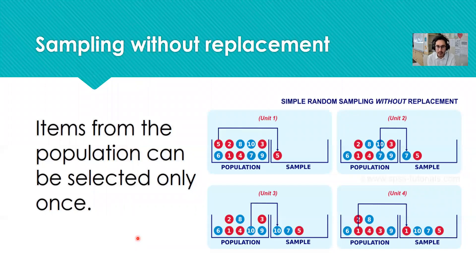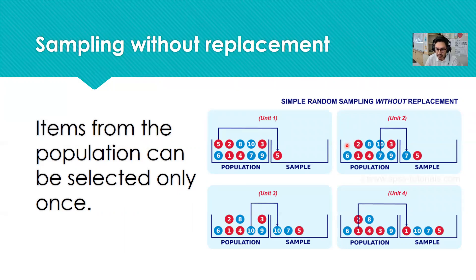Let's first begin by talking about sampling without replacement, which is probably done the majority of the time. When we sample without replacement, items from the population can be selected only once. In this diagram, there are 10 items in our population, and the first selection was item number five. When we go to look at the next selection, item five is no longer available — it's been removed from the population and not replaced, so the next item has to be something unique, which happens to be seven. Every time we select an item, it is removed and is no longer available for selection again.